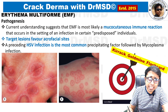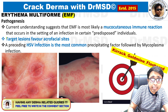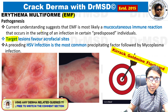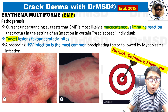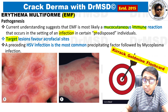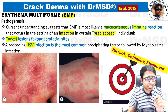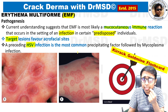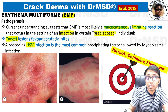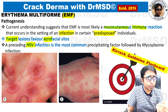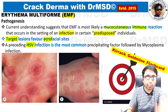Let us start our discussion with erythema multiforme. In the etiopathogenesis, it is understood to be a mucocutaneous immune reaction that occurs in a setting of infection in certain predisposed individuals. The most common infection is herpes simplex virus. In exams, they will likely show grouped vesicular lesions near the lips along with target lesions mainly over the palms at acrofacial sites — this is erythema multiforme with multiple target lesions.